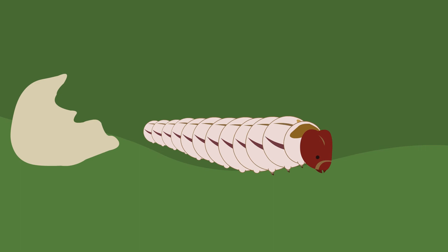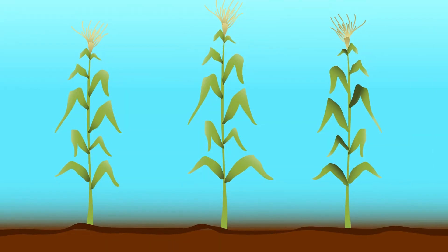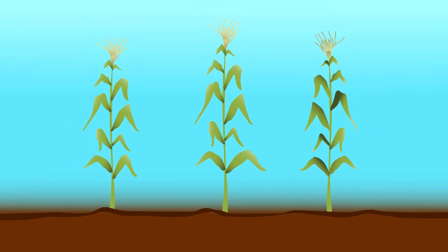The larvae will hatch and start feeding on the grass, but die soon afterwards. Let's recap this IPM strategy featuring the push-pull technique.